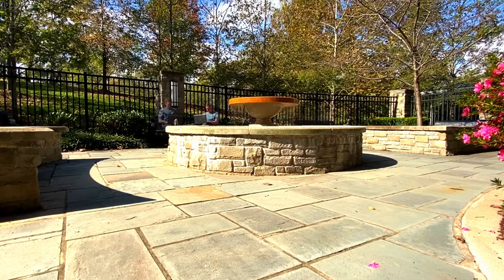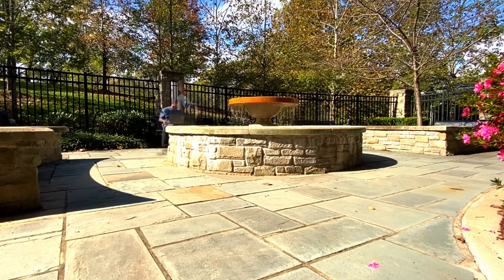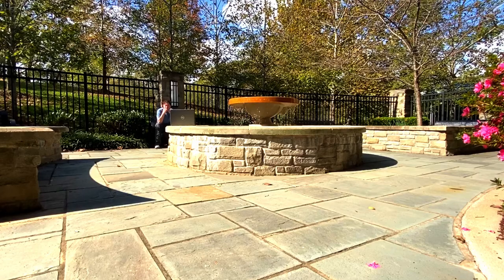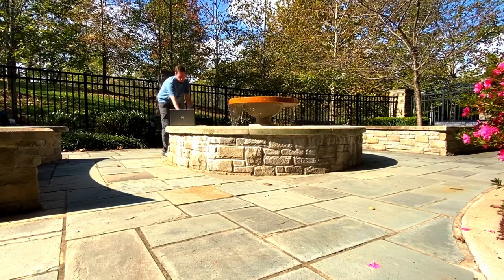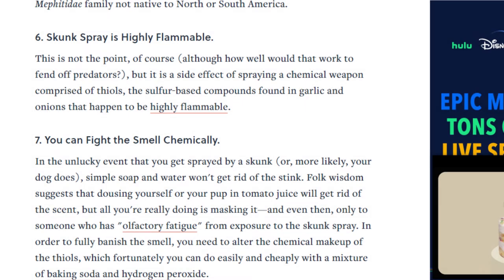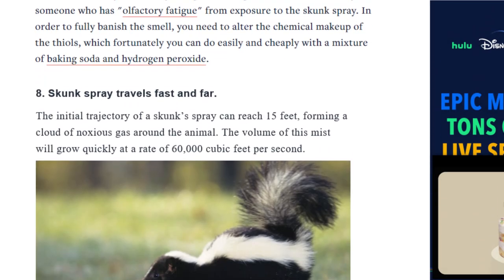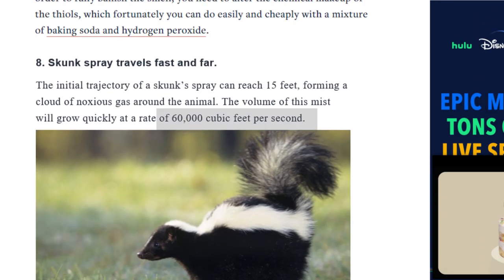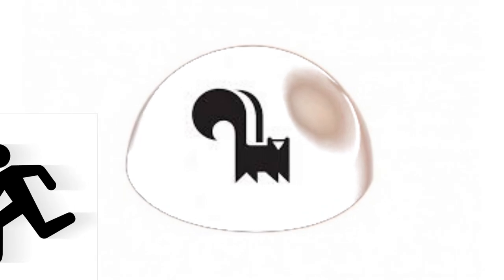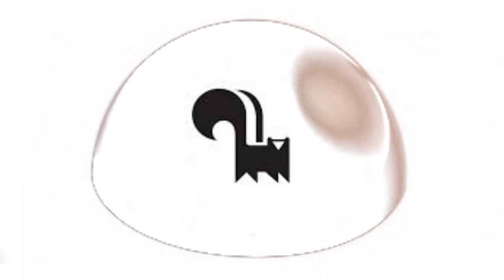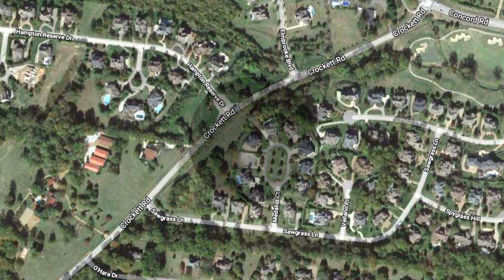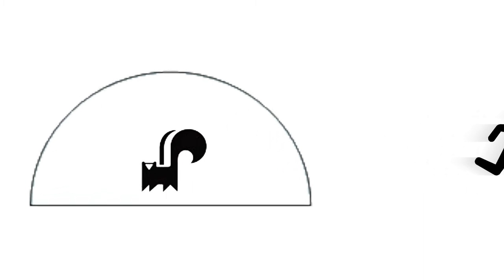I returned to the house and scoured the internet for the velocity of skunk spray. Could I outrun this? There was no information on the internet. And then a clue. One site listed the rate at which the volume of skunk spray expands. I was in. The radius around a skunk makes half a sphere called a hemisphere and expands rapidly outward, eventually encompassing an entire neighborhood. But how fast was the radius coming toward me? I needed to find the rate of the radius. In other words, r prime.